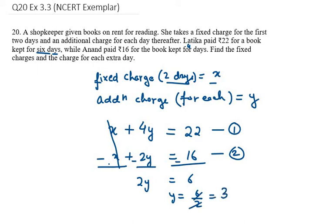Now we need to find x. Using the second equation, x + 2y = 16. Substituting y = 3, we get x + 2(3) = 16, so x + 6 = 16, therefore x = 10 rupees. That's your answer for question number 20.